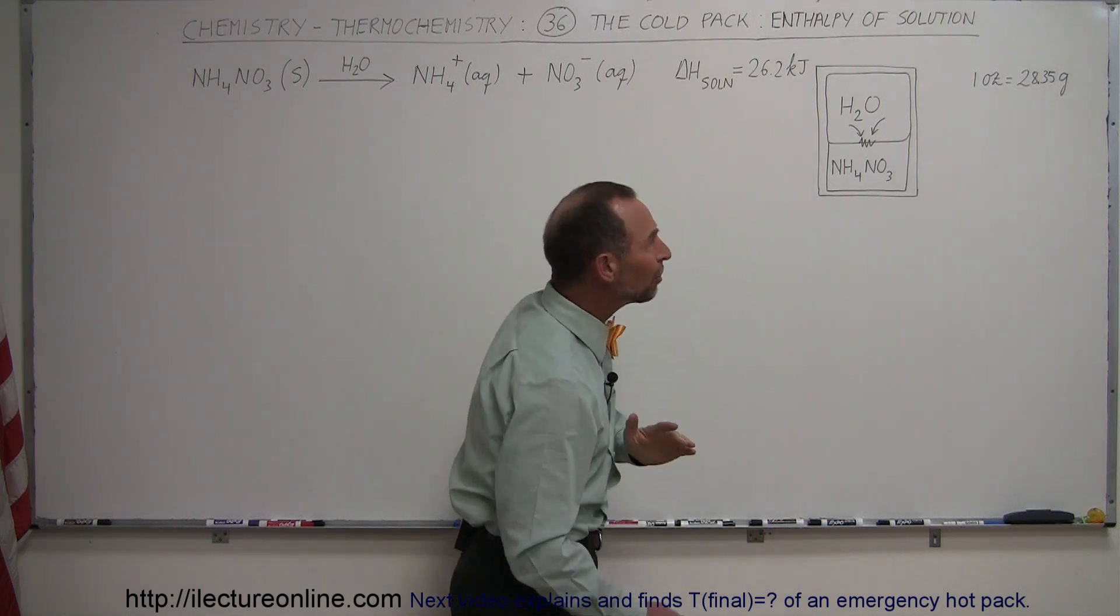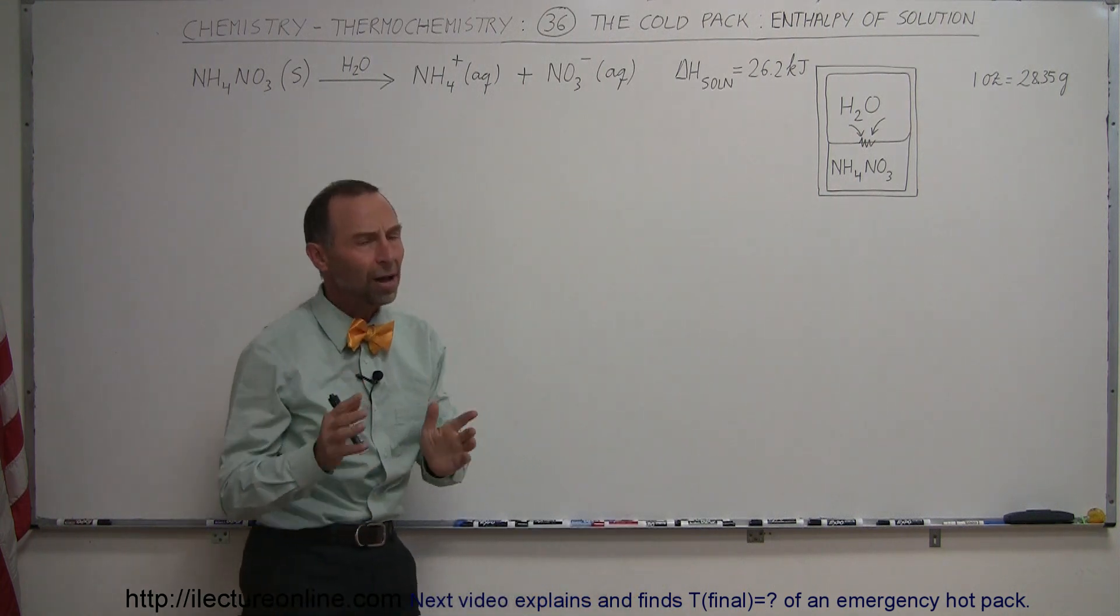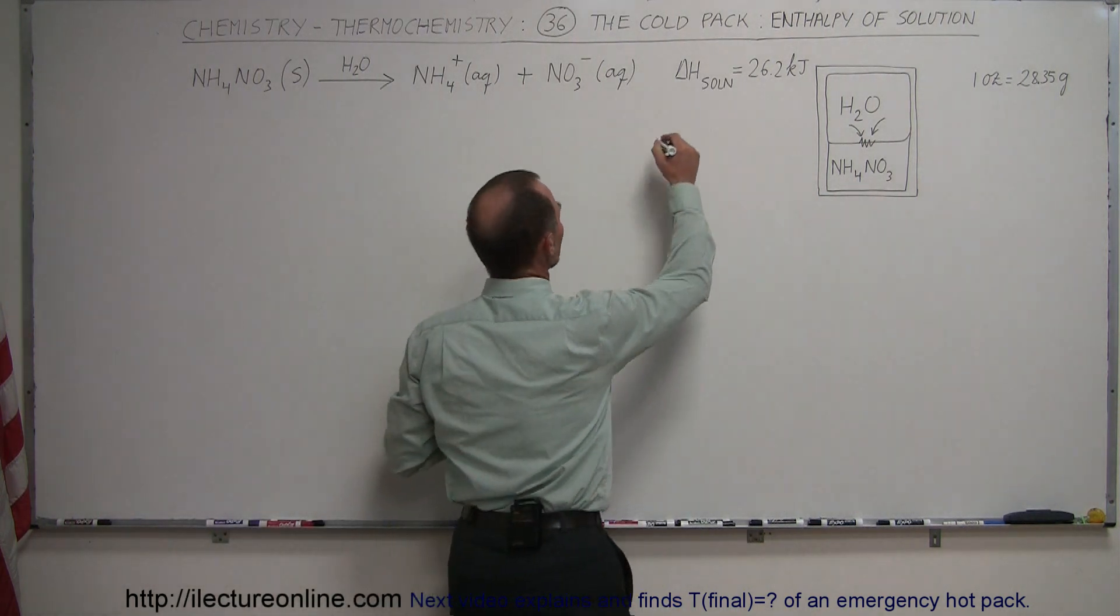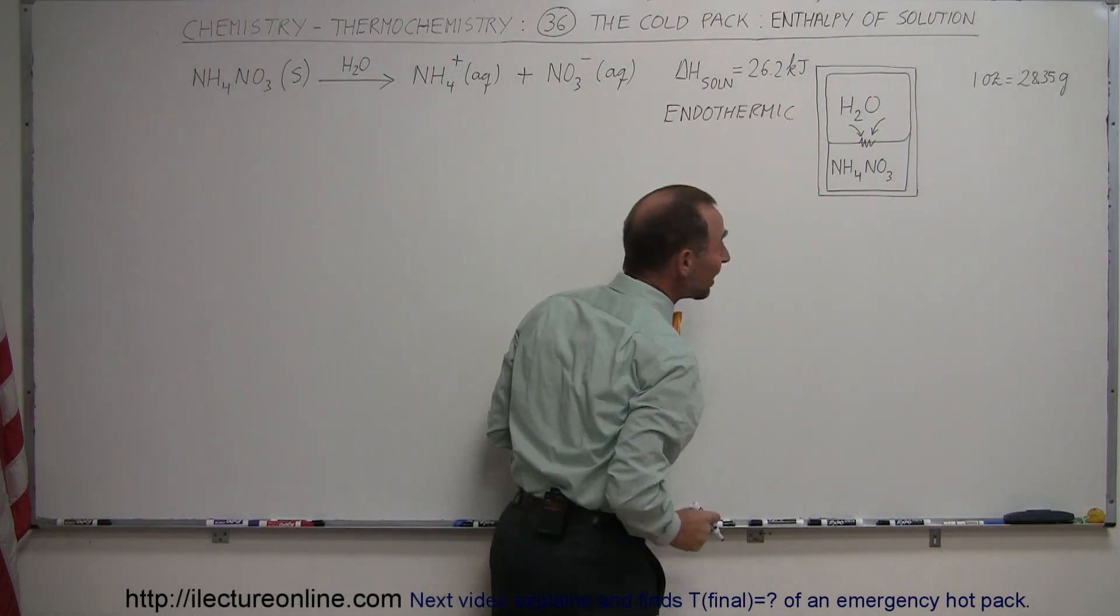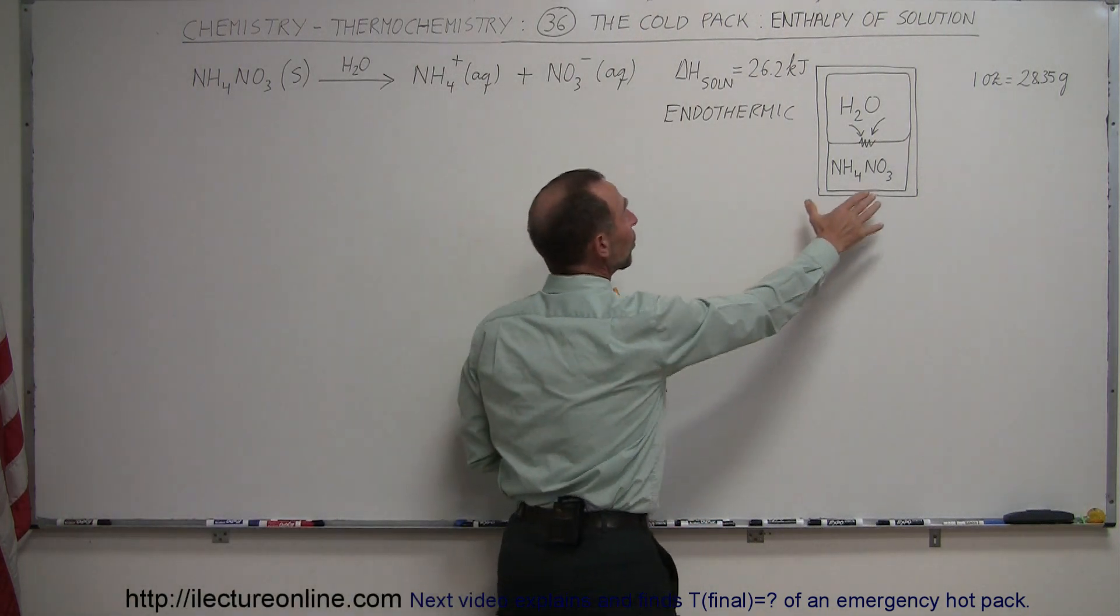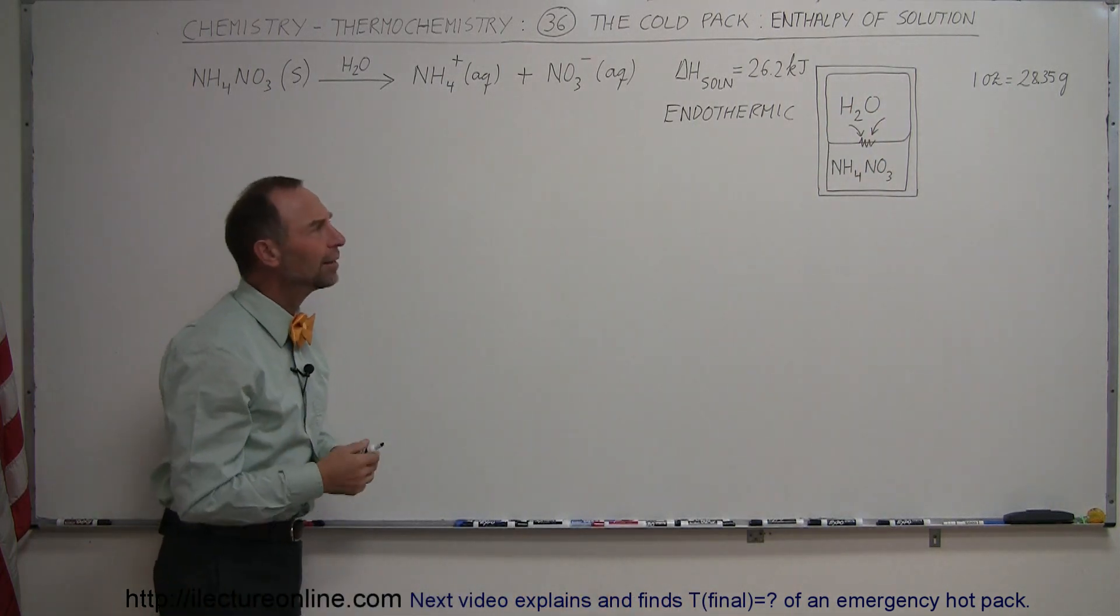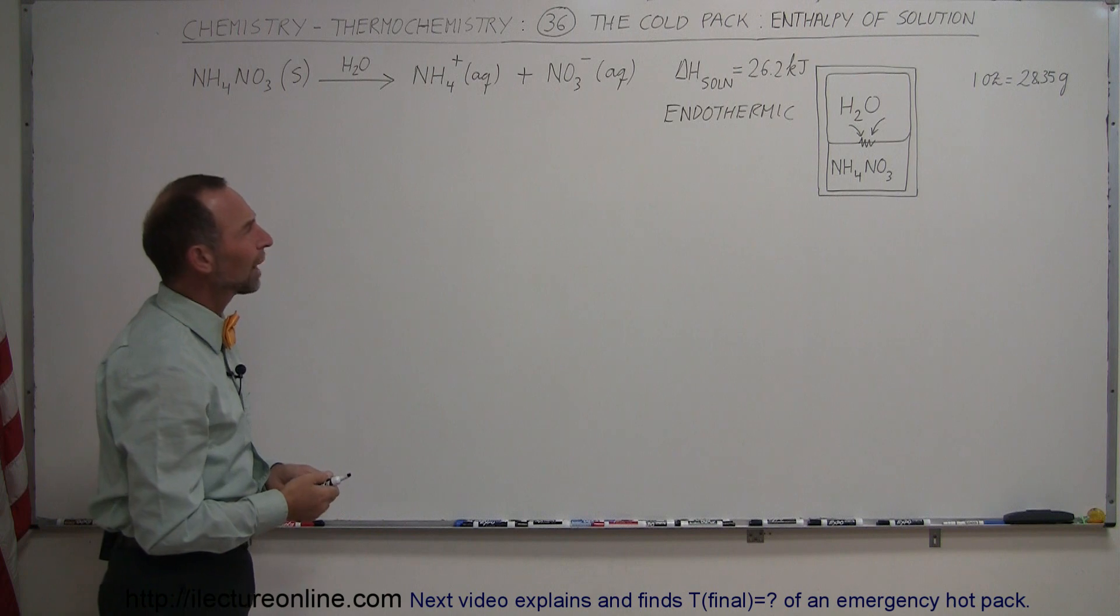It has a delta H solution, meaning an enthalpy of solution of a positive 26.2 kilojoules. Positive means that it's endothermic. What does that mean? That means it absorbs heat. So as it absorbs heat, where does it have to come from? It comes from the water in the pack, cooling the water down.